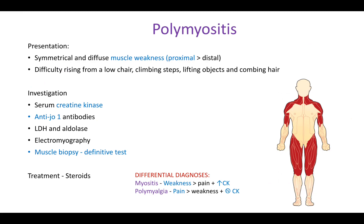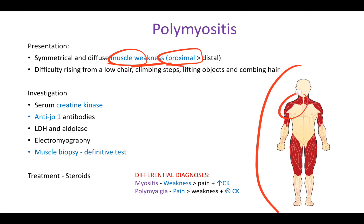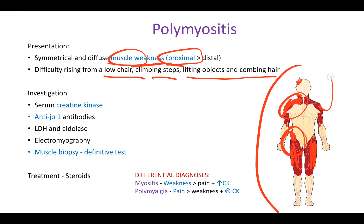In polymyositis, there is weakness in your proximal muscles — the neck, upper arm, pelvic girdle, and proximal lower limb muscles are all affected. When the patient tries to get up from a chair, they use their pelvic girdle muscles. Climbing steps and activities involving proximal upper limb muscles — like combing hair or lifting objects — will also cause difficulty due to this weakness.